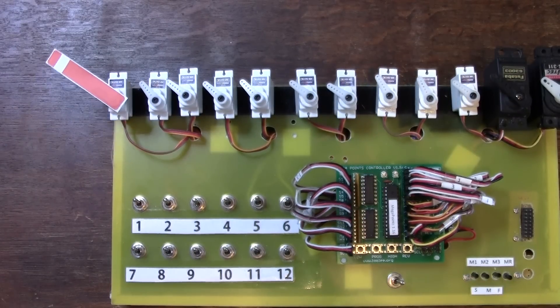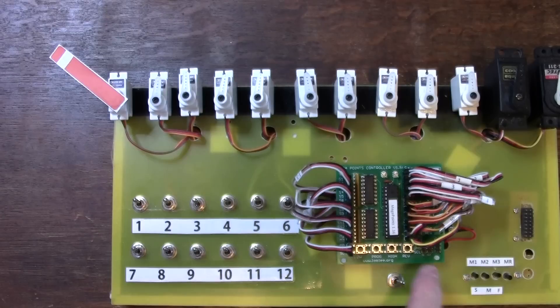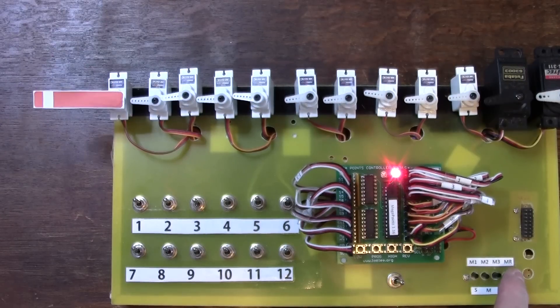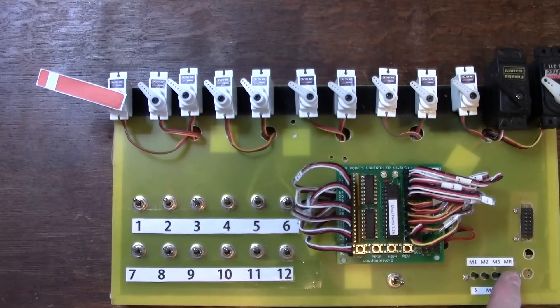As I didn't set the endpoints on outputs 2 to 12, it's going through 90 degrees. But can you see how the other 11 don't affect the first one I've set up?